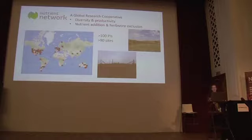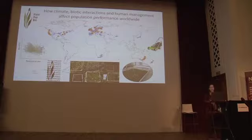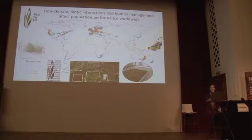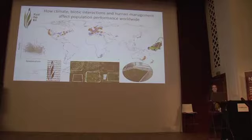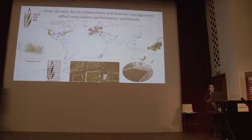The second network is Plant PopNet, which I set up having been inspired through my interactions within NutNet. I assembled a group of like-minded ecologists, population biologists, and demographers who like being face down in a field counting things in quadrats. We've compiled a global dataset on how climate, biotic interactions, and human management affect population performance of our focal species, Plantago lanceolata — ribwort plantain — one of the most common plant species in the world. The blue points on the map come from GBIF showing its occurrence data.